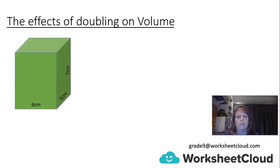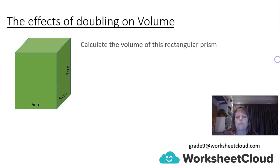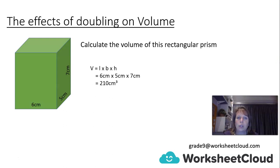Here is our shape — it's a rectangular prism. As you can see, it has a length of 6 cm, a breadth of 5 cm, and a height of 7 cm. Before we look at the effects, let's work out the volume. Volume is length times breadth times height, so 6 times 5 times 7 gives us 210 cm cubed.